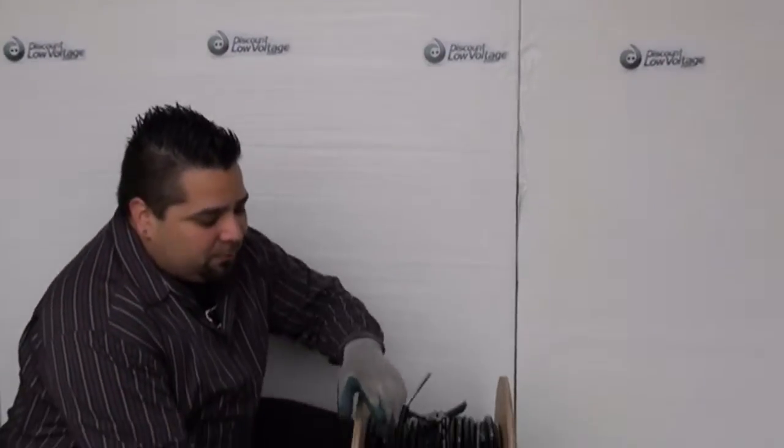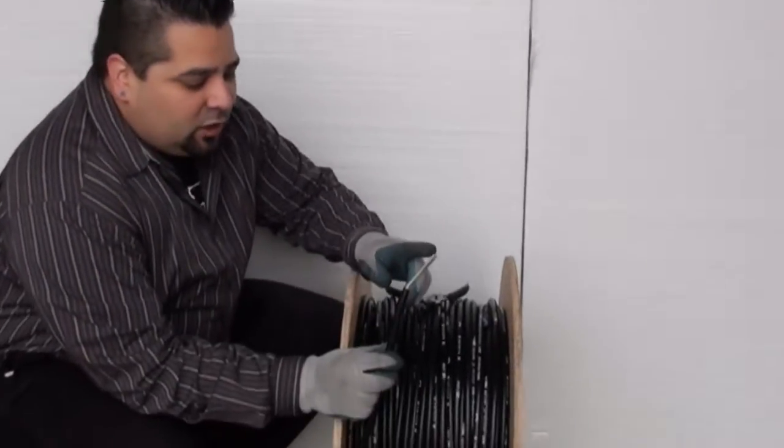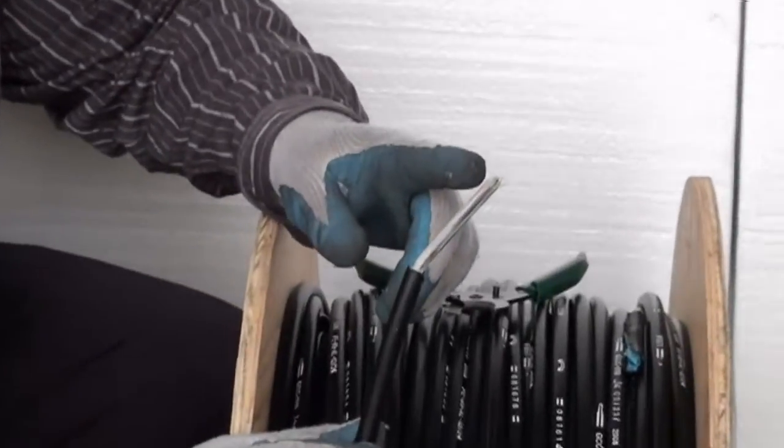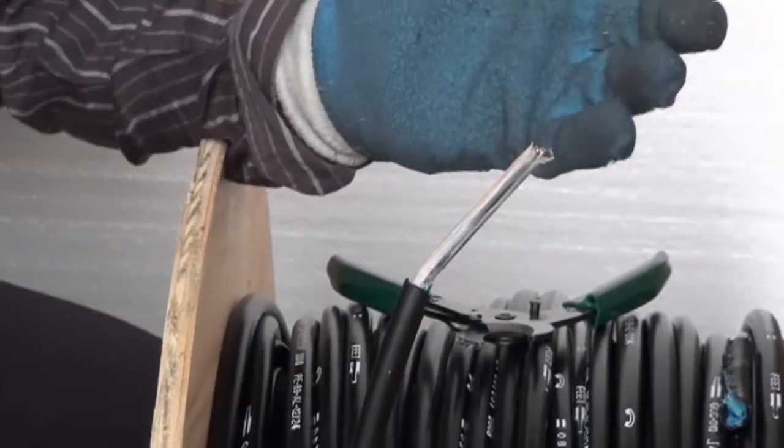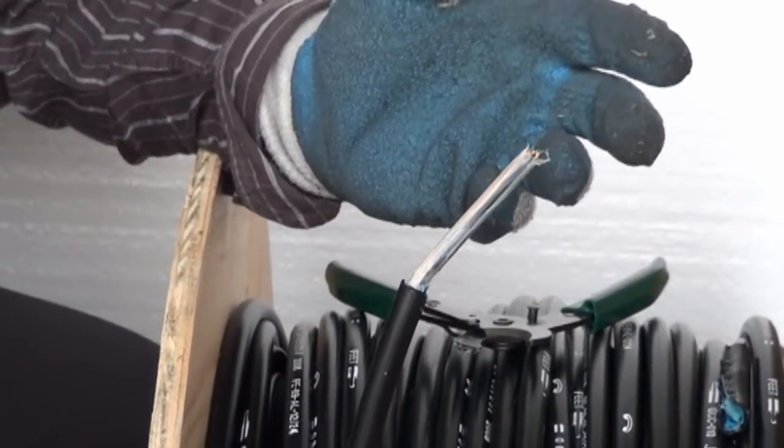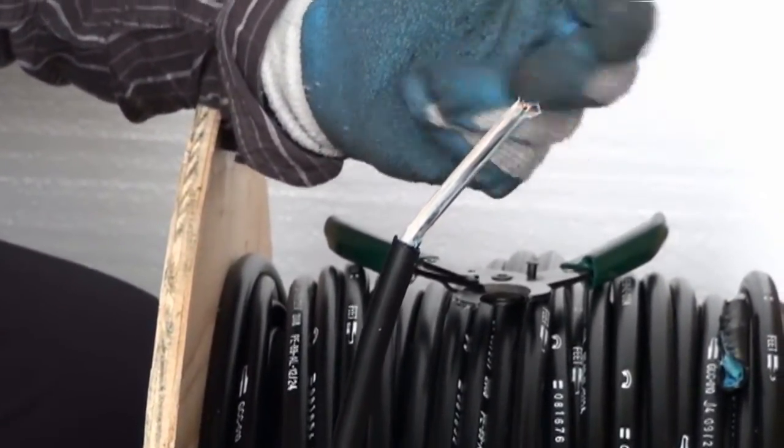Now I went ahead and stripped apart a piece of the jacket here and underneath the jacket we have the gel with all the pairs. It's a water blocking gel. I got the gloves on because if you touch it with your hands, good luck washing it off with the water.